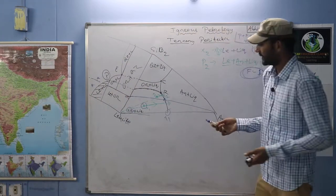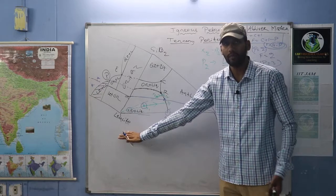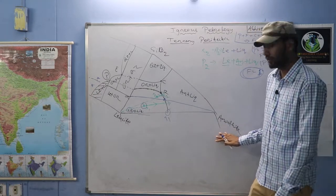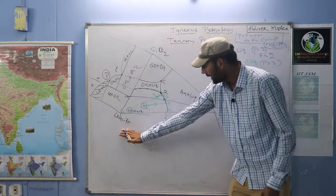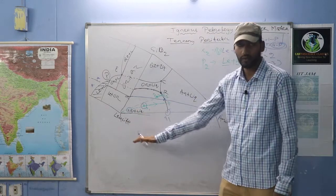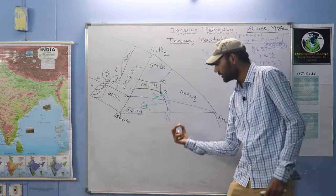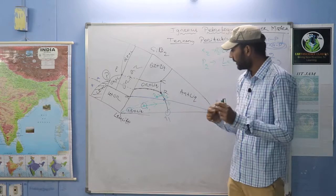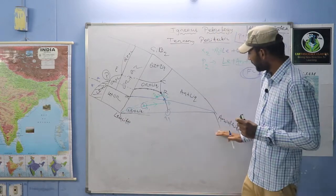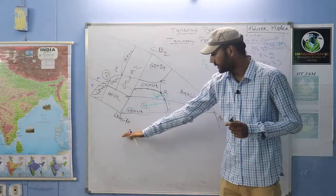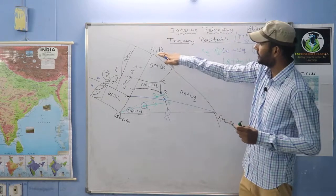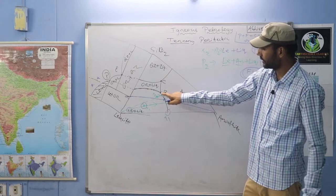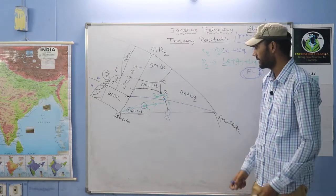Continuing from before: pure leucite and pure anorthite have higher melting temperatures. When you add leucite to anorthite or anorthite to leucite, at the eutectic point the temperature decreases. Then adding some quartz causes the temperature to decrease further to reaction point R.